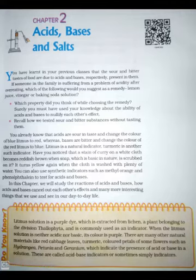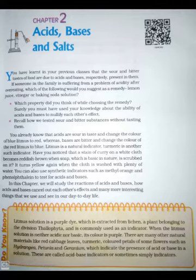Can you write the equation for the reaction you have observed? Activity 2.4: Place a few pieces of granulated zinc metal in a test tube. Add 2 ml of sodium hydroxide solution and warm the contents of the test tube. Repeat the rest of the steps as in Activity 2.3 and record your observations. The reaction that takes place can be written as: 2NaOH + Zn → Na₂ZnO₂ + H₂ (sodium zincate). You find again that hydrogen is formed in the reaction. However, such reactions are not possible with all metals.